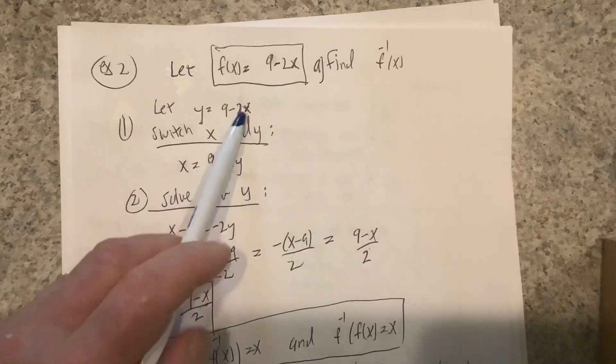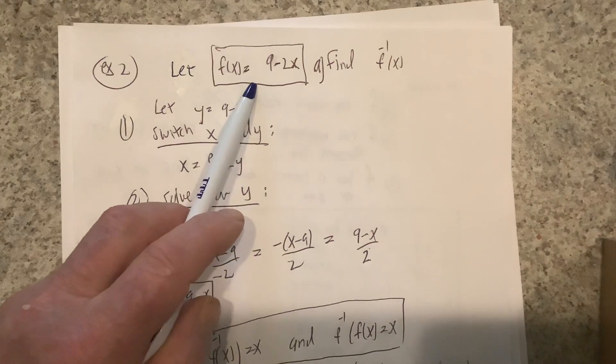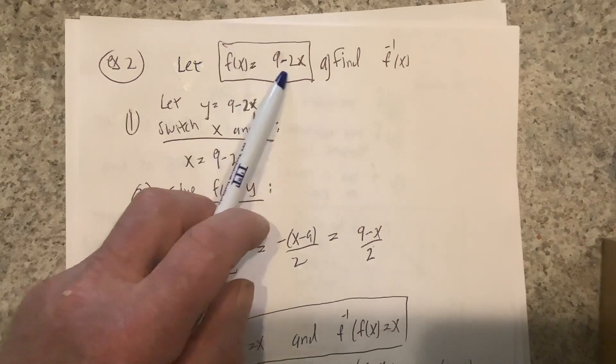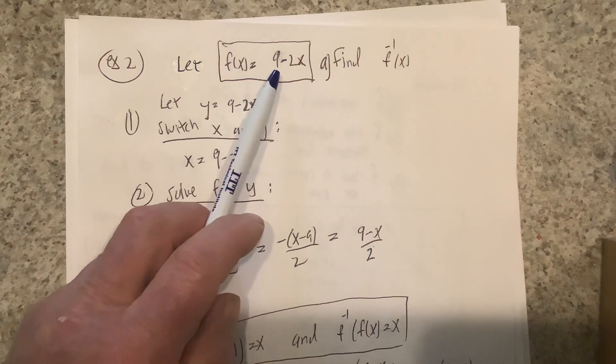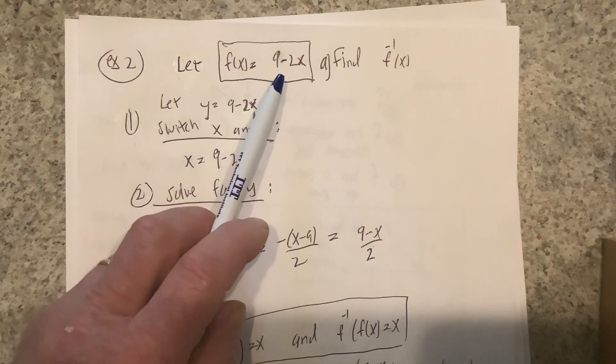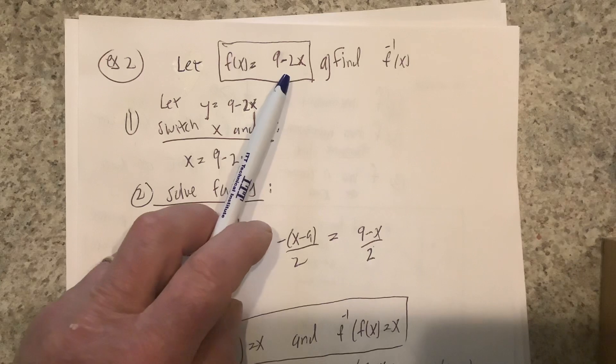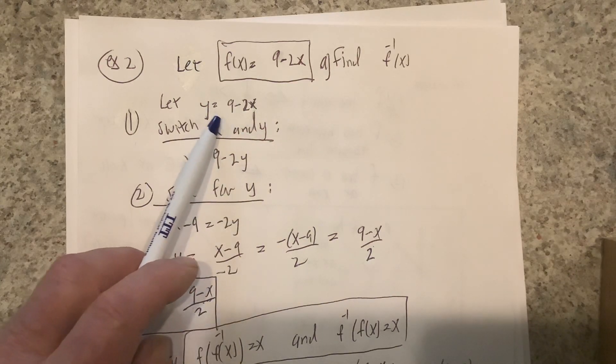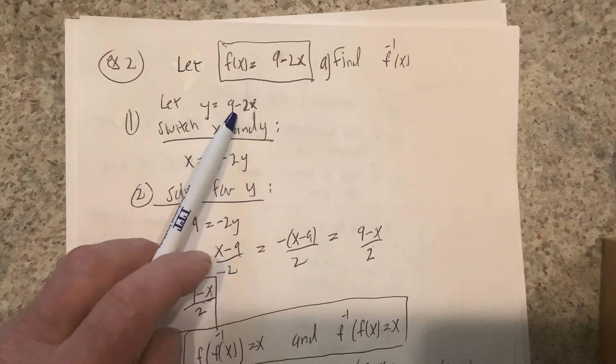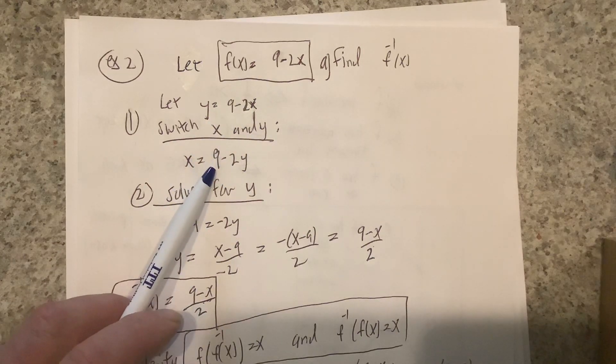Another thing that was common was finding the inverse of a function. Now remember, it has to be a one-to-one function before you can find the inverse. But if it's a one-to-one function, then what I would suggest you first do is let y equal the function instead of f(x). Let y equal 9 minus 2x, and then switch x and y.